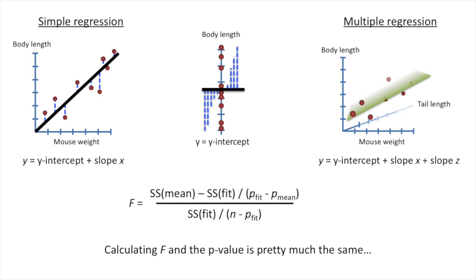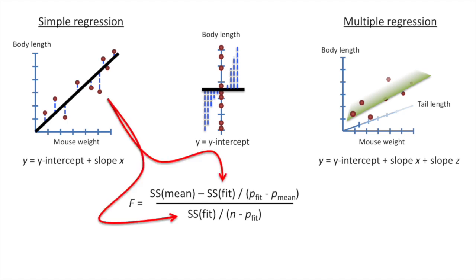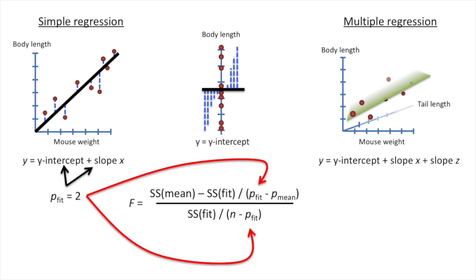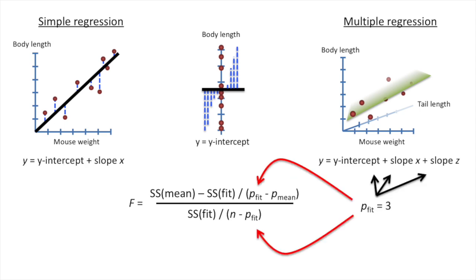Now we want to calculate a p-value for our r-squared. Calculating f and the p-value is pretty much the same. You plug in the sums of squares around the fit, and then you plug in the sums of squares around the mean. For simple regression, p-fit equals 2, because we have two parameters in the equation that least squares has to estimate. And for this specific example, the multiple regression version of p-fit equals 3, because least squares had to estimate three different parameters.